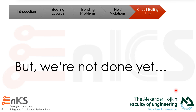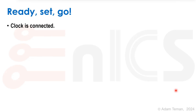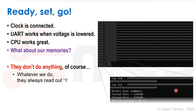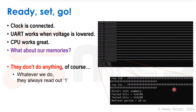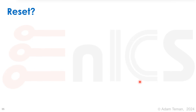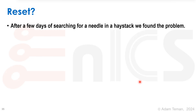We're not done yet — this story just keeps getting better. We're at the ready-set-go stage: the clock is connected, UART works, when the voltage is lowered the CPU works great, we can get the hello world after loading it via UART. Everything is perfect. But what about our memories? Whatever we do, they always read out 0xFFFFFFFF — all ones. It doesn't matter what we write to them; we always read out ones.